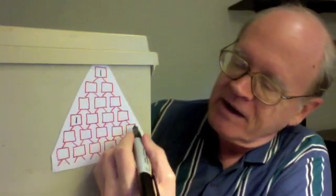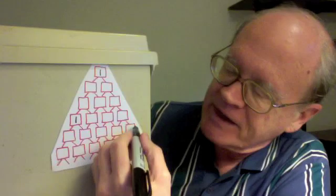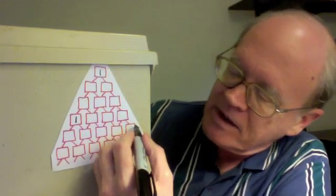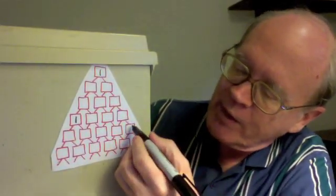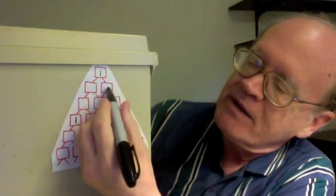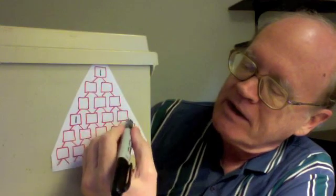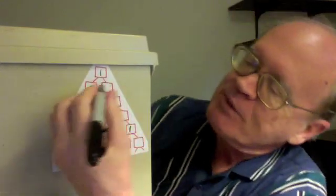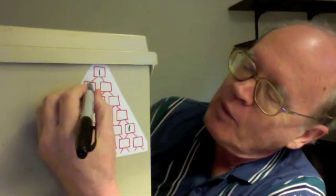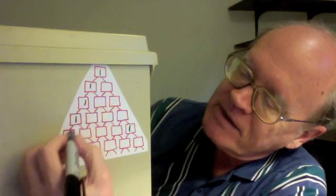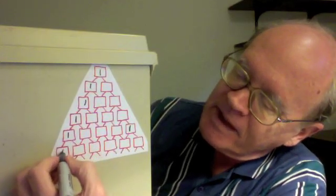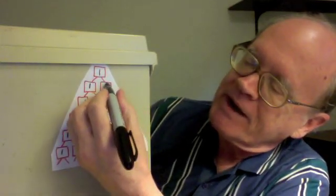To take a location at the extreme right, this one for example, there's only one way to get here, and that's to veer to the right every step of the way from here on down. In fact, I must put 1s all the way down the left-hand side as well as all the way down the right-hand side.